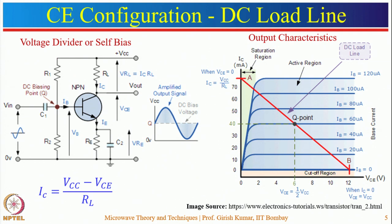The voltage divider bias circuit makes Ic independent of temperature-varying parameters. If the reverse saturation current increases with temperature, there will be a decrement in base current, keeping Ic constant. In this case Ic = (Vcc − Vce) / Rl. The output characteristics show variation of Ic with respect to Vce for constant base current, with the cutoff and saturation regions identifiable.